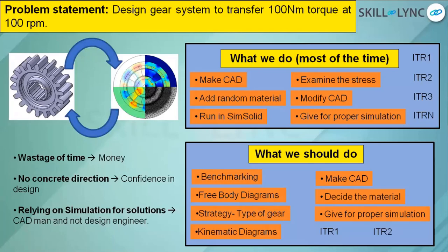Iteration one checks whether your calculations are properly intact. If you missed something, iteration two gives a clearer picture — you can play around with the material or make design modification optimizations. Iteration three is particularly about confirmation of your design — it gets verified. The simulation is supposed to verify your design, not give you solutions; it will give you directions. With iteration three, you can rely on your design and send it for manufacturing, because manufacturing mistakes cost the company a lot of money and time.